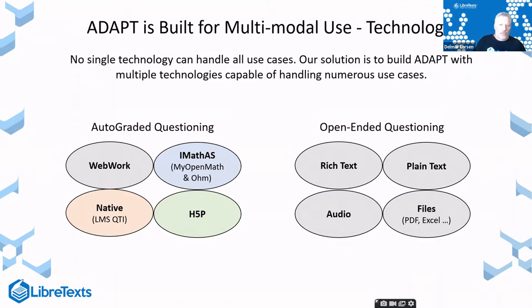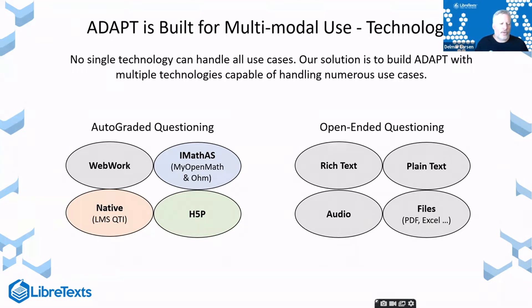ADAPT is our term for the homework system, meant to provide assessments either formatively or summatively, connected to a gradebook or not, in a variety of modalities. It's exceedingly powerful technology, and part of the problem with power is complexity. ADAPT is built for multimodal use — it can be used for auto-graded questioning or open-ended questioning. For example, in my quantum mechanics class the vast majority of questions I ask are open-ended — I need to see students' thinking and process.